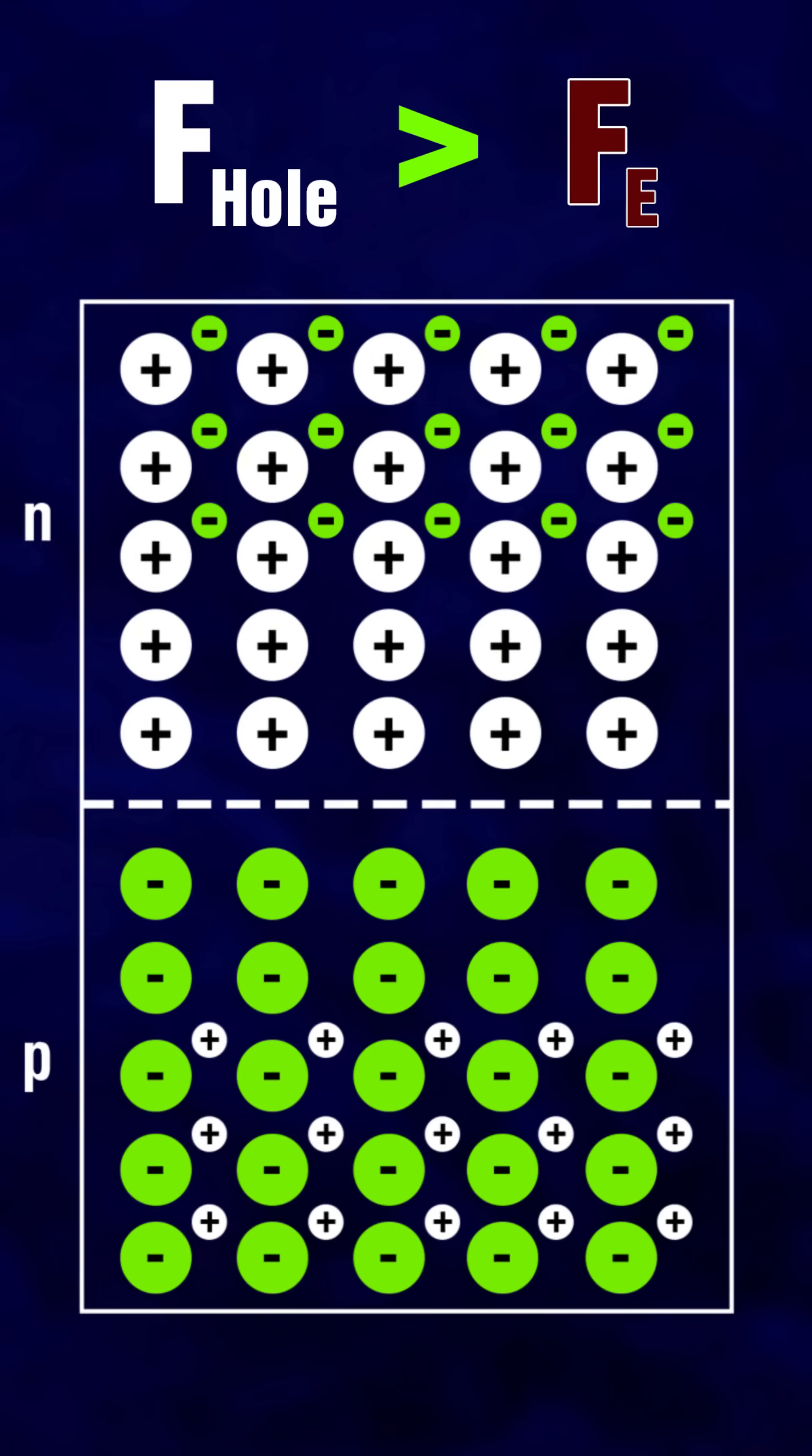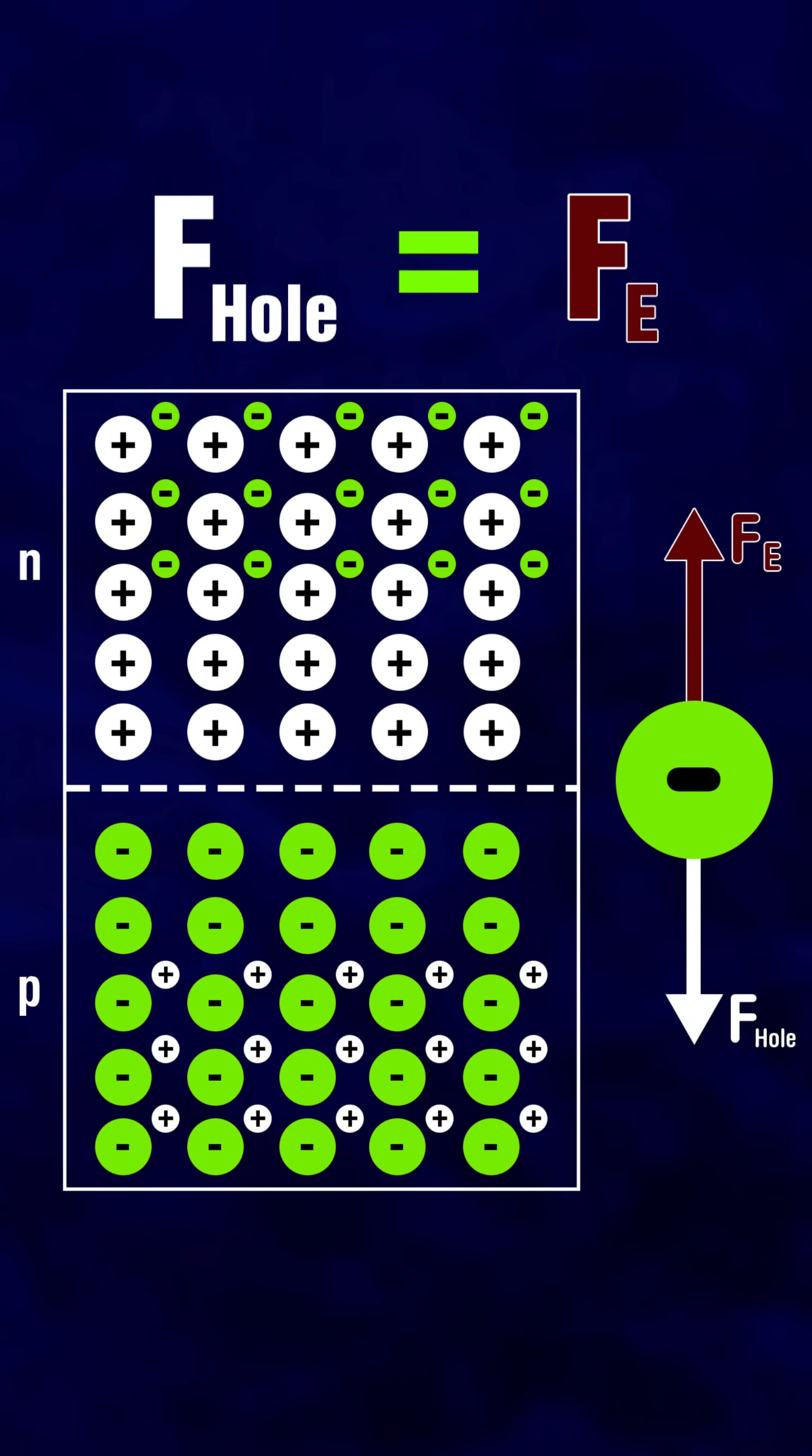At equilibrium, the force due to the holes will be equal to the force due to the electric field. Thus, no more diffusion of electrons will happen.